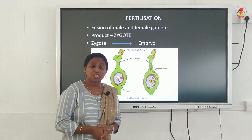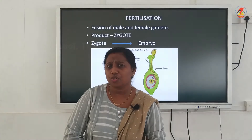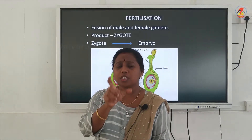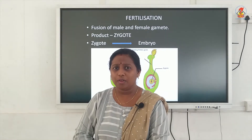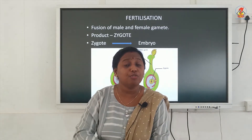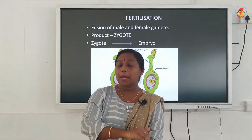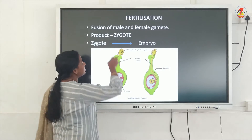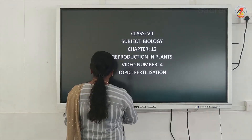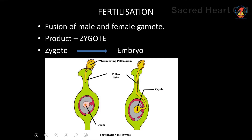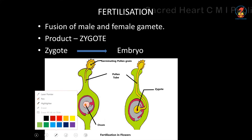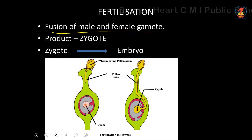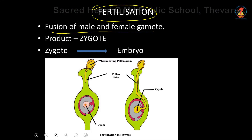What is fertilization — what is today's topic? It is fertilization. The process of fusion of a male gamete with a female gamete is called fertilization. It is a fusion of a male and a female gamete — this is what is called fertilization.